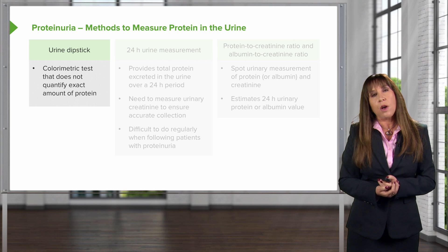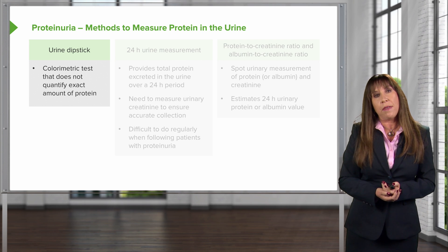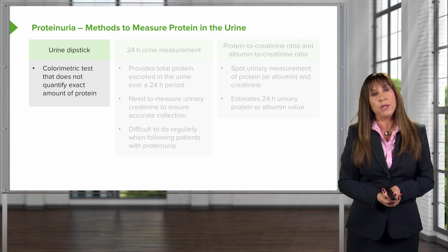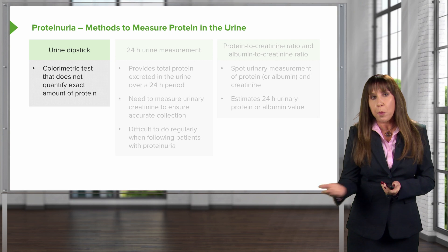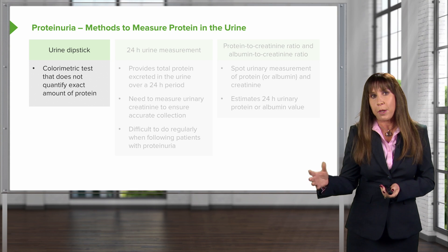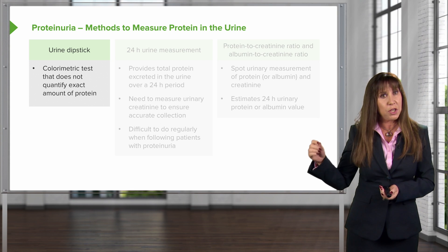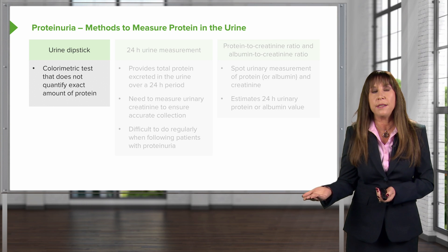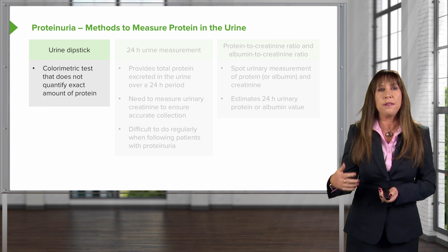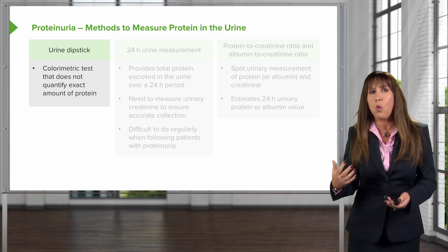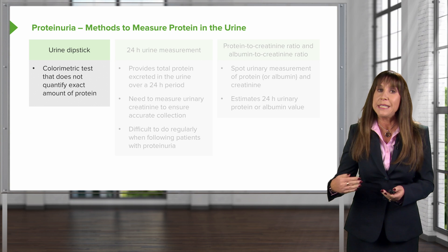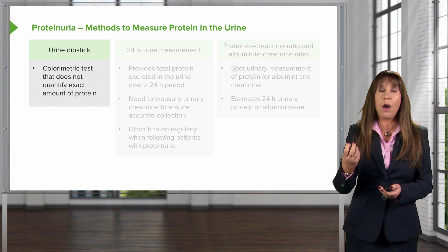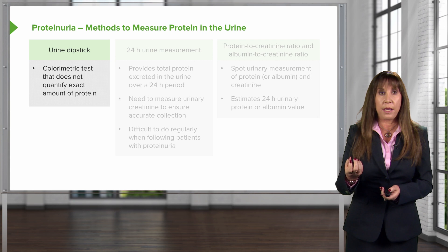There are a couple of different methods we can use to measure protein in the urine. Number one, and probably the most simple, is to just do a urine dipstick. This is essentially a colorimetric test that doesn't quantify the exact amount of protein, but it does tell you whether protein is present depending on how dark the urinary dipstick colors.